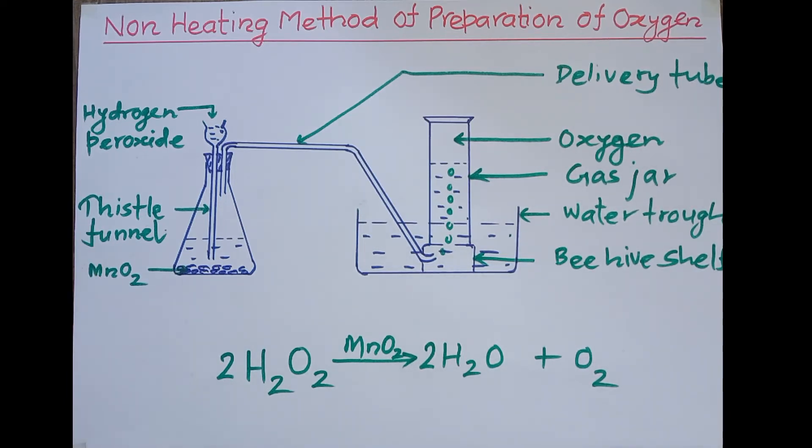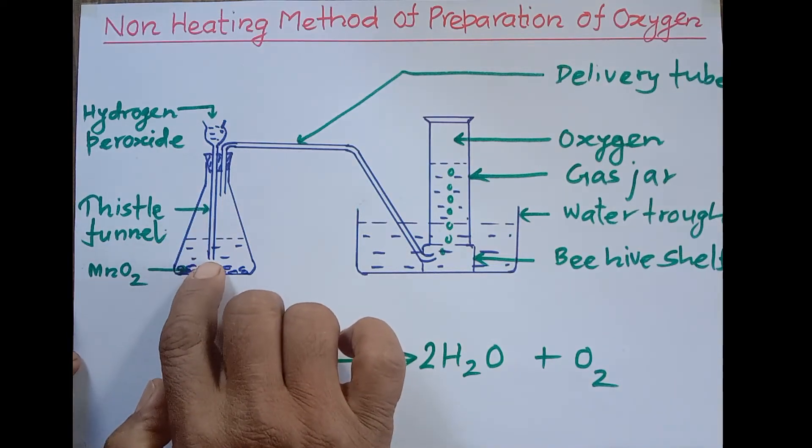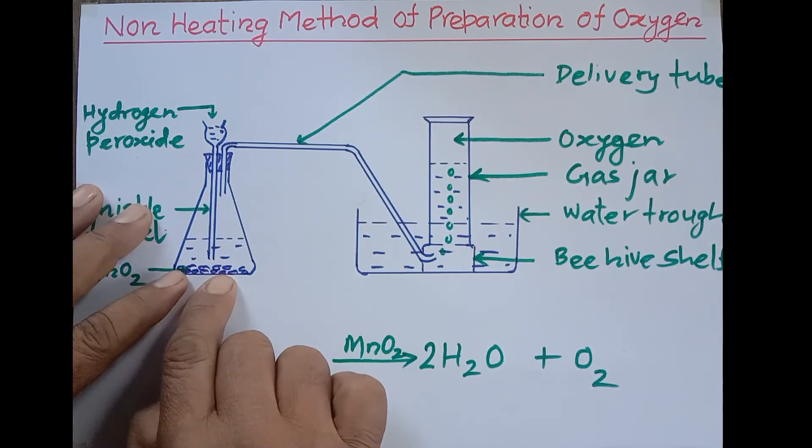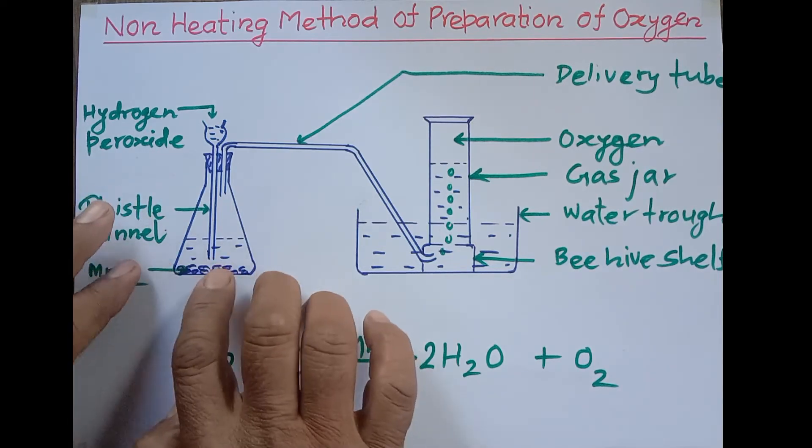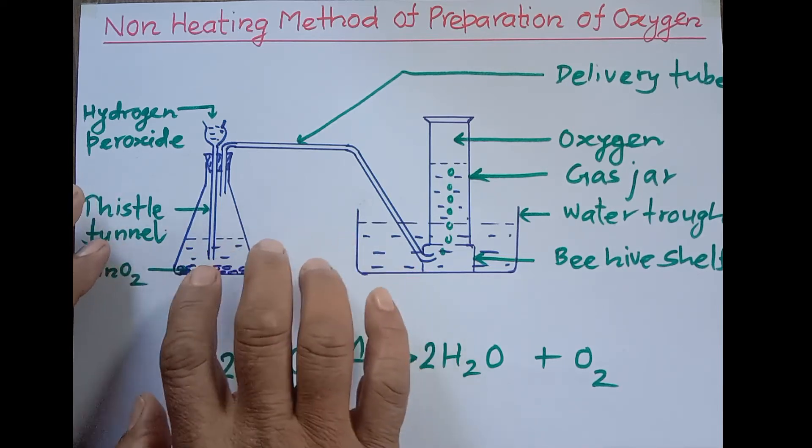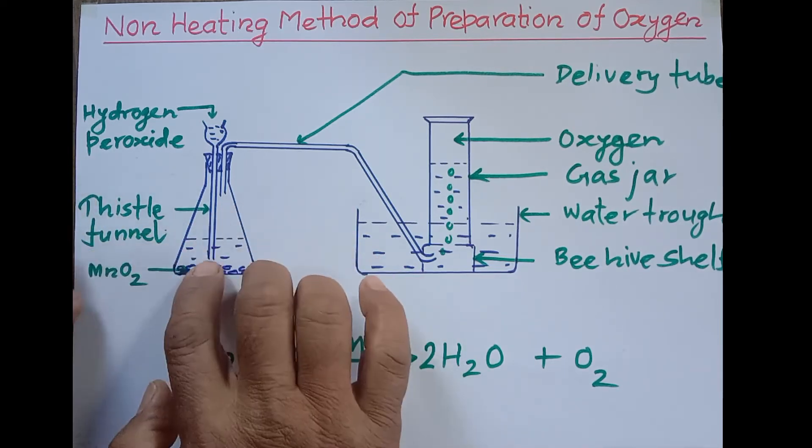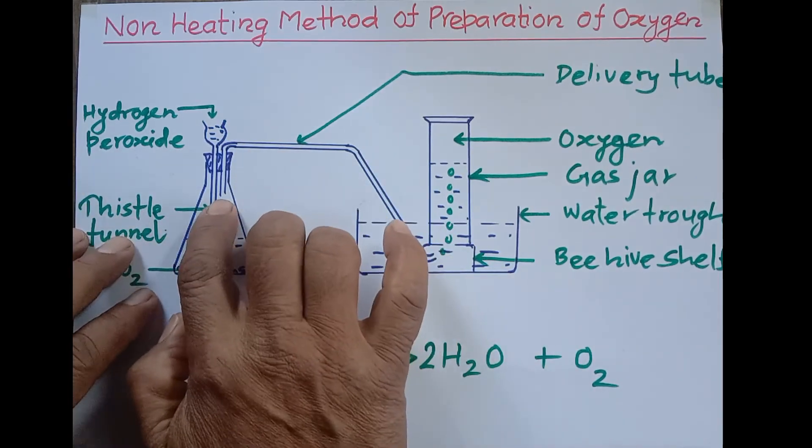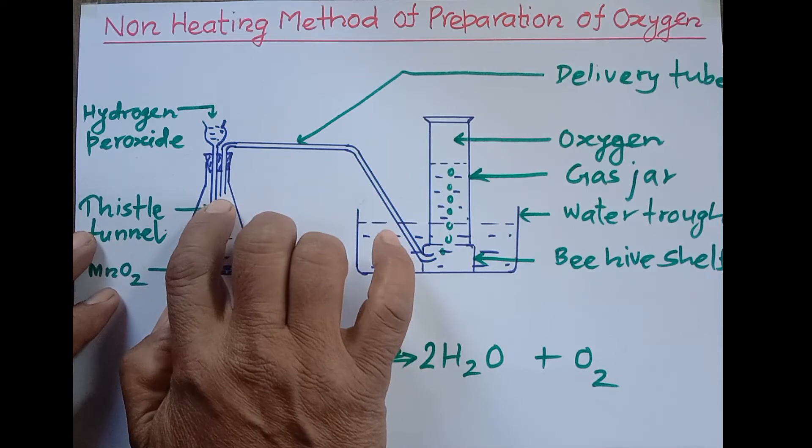This is the complete diagram of laboratory preparation of oxygen gas, but we have to take care of a few matters. First point: the tip of the thistle funnel should be inside the hydrogen peroxide, otherwise when it decomposes, the oxygen gas produced may go through this tube if the tip is not deep.